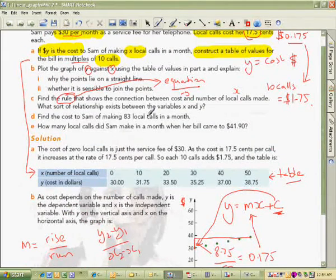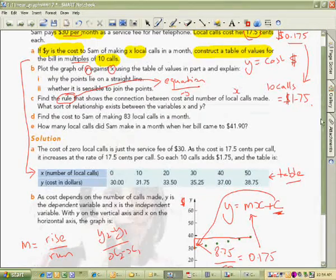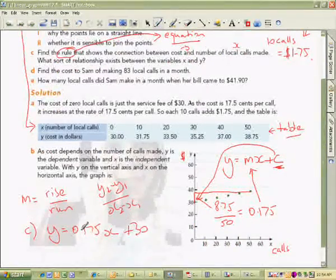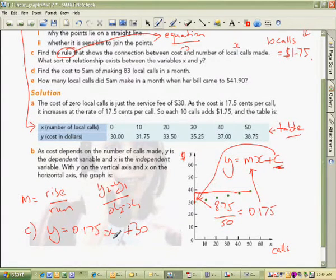Next part here, find the cost of making 83 local calls. Look, I'm not even going to bother to actually calculate that for you, but here we just use this equation. X is the number of calls. How many are there? Well, it says 83. So I stick 83 in here and do the calculation. And that's as simple as that. And that will tell me how many dollars.